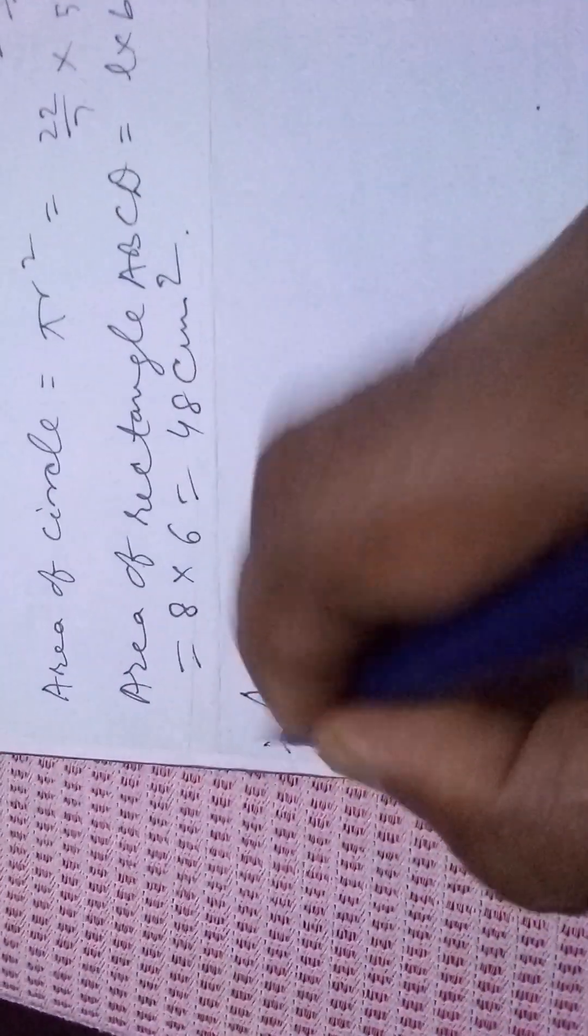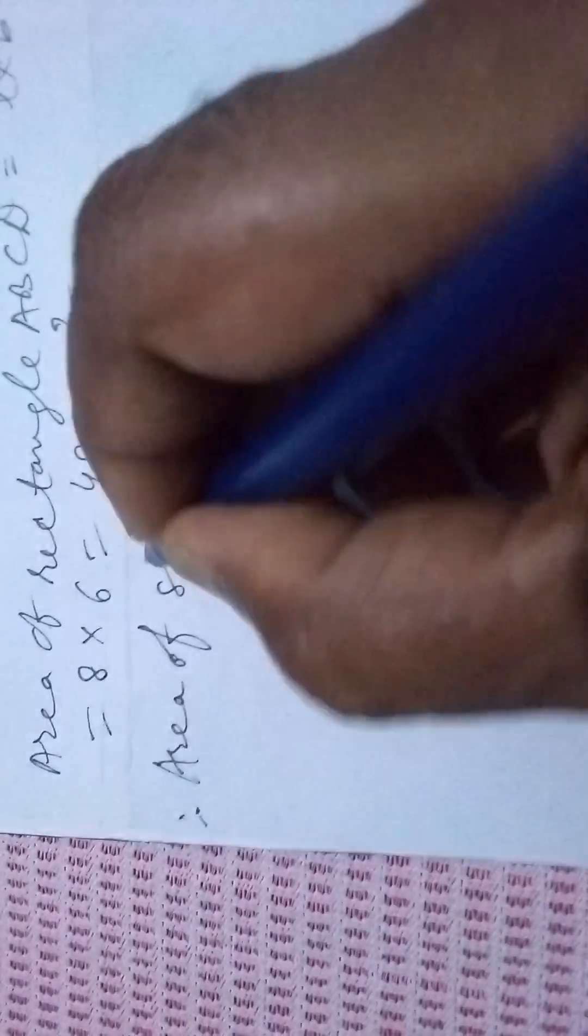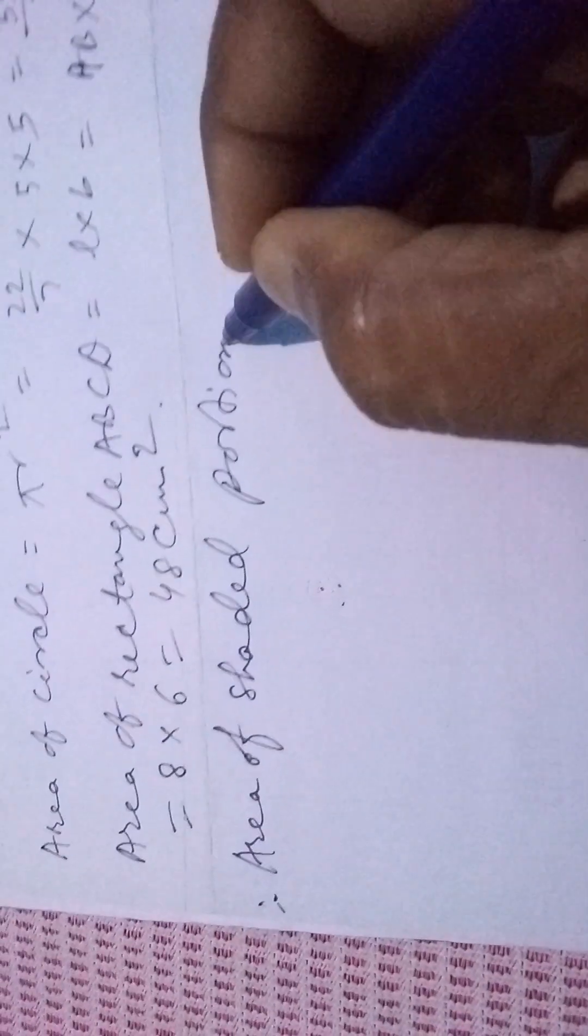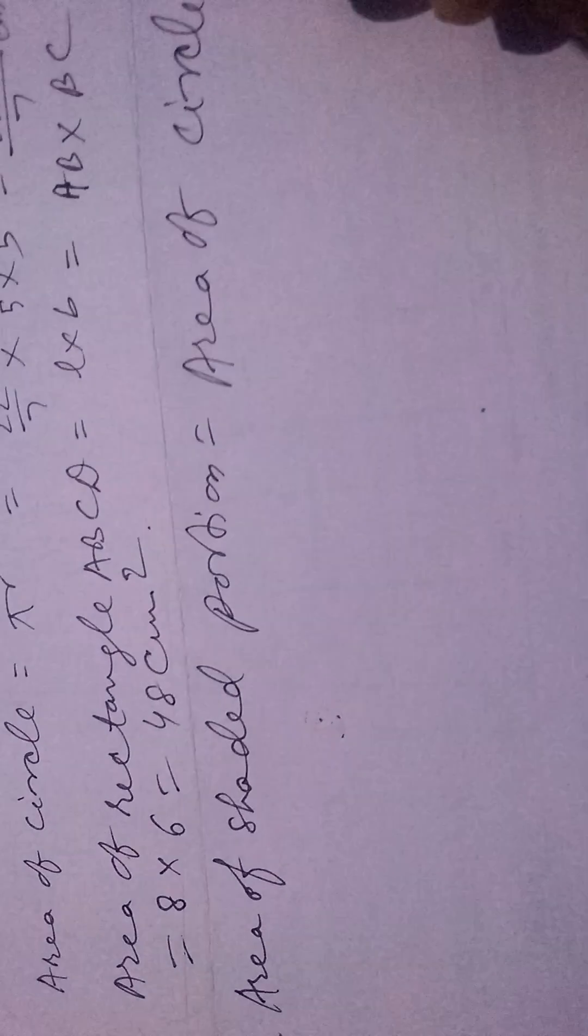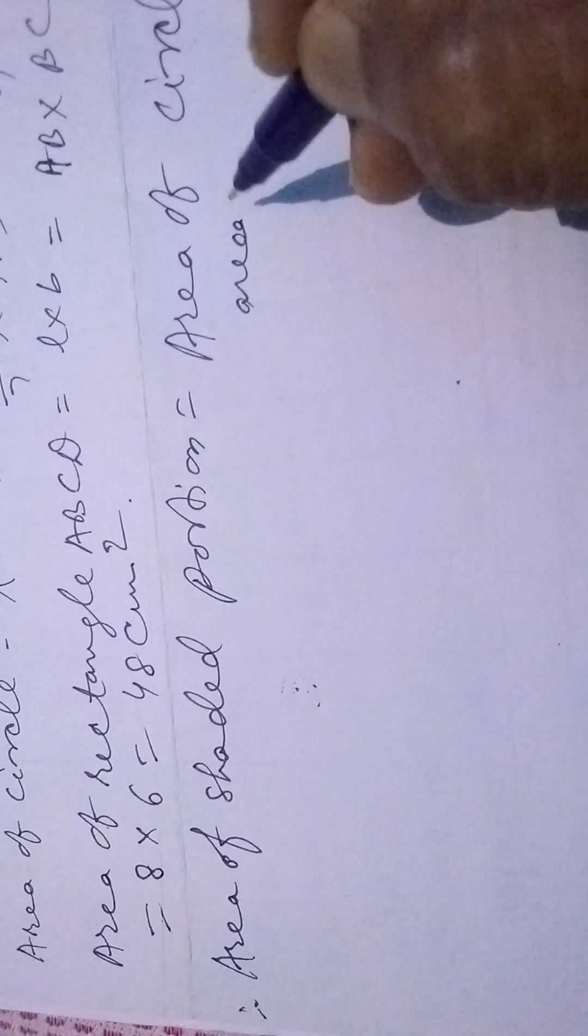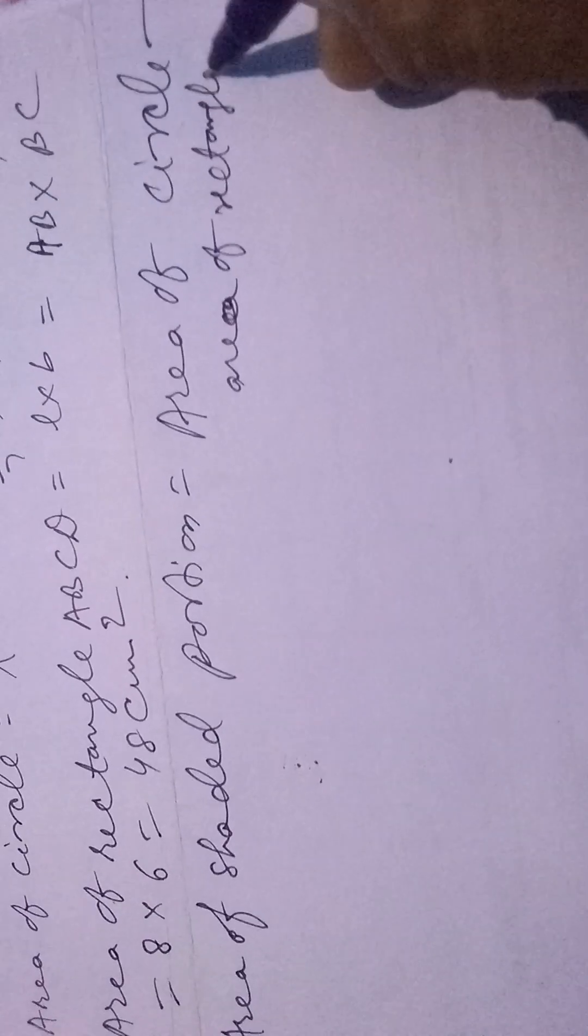Therefore, area of shaded portion equals area of circle minus area of rectangle ABCD.